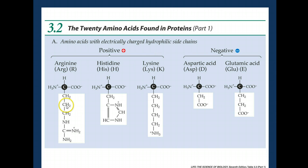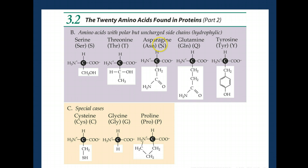Some amino acids have charged side chains — either positively or negatively charged. Just like the amino groups and carboxyl groups, the positive charge comes from an amino group and the negative charge comes from a carboxyl group. In the polar but uncharged amino acids, there are five of them. Three have hydroxyl groups — on serine, on threonine, and on tyrosine — and we're used to thinking about hydroxyl groups as polar entities. The other two, asparagine and glutamine, have amino groups, but in this conformation those amino groups are less likely to be fully charged — it's more like a partial charge.